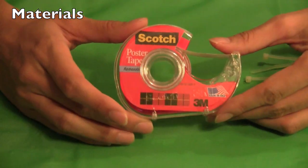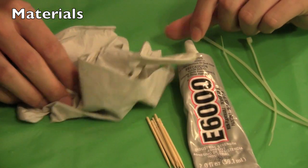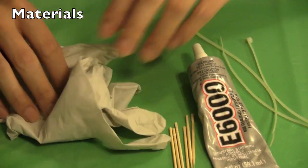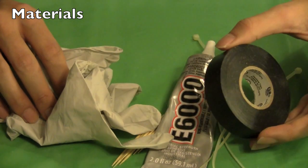Optional materials that I'll be using in this project include double-sided poster tape. To put the watch back together again I'll be using E6000 glue, toothpicks to apply the glue, gloves, and zip ties to hold my watch together or you could use electrical tape.